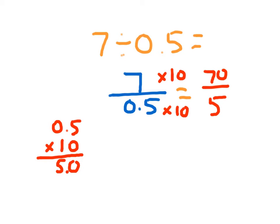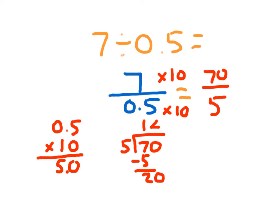And so 7 divided by 0.5, or 5 tenths, is basically 70 over 5, which is 70 divided by 5. I show my work there, and you'll see that the answer is 14. So 7 divided by 0.5 is 14.